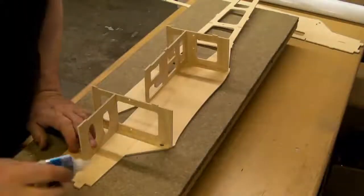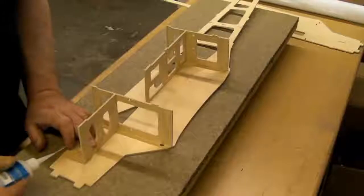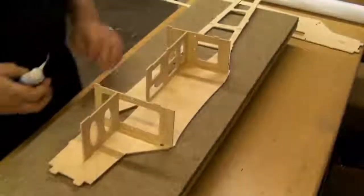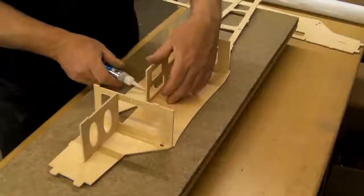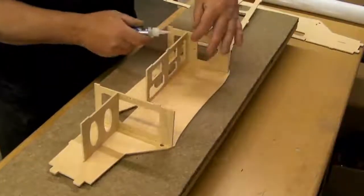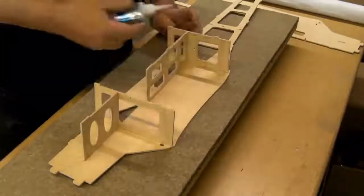Now we can put the thinner type of CA glue along the tabs and ensure that the whole thing is glued down. Like this.